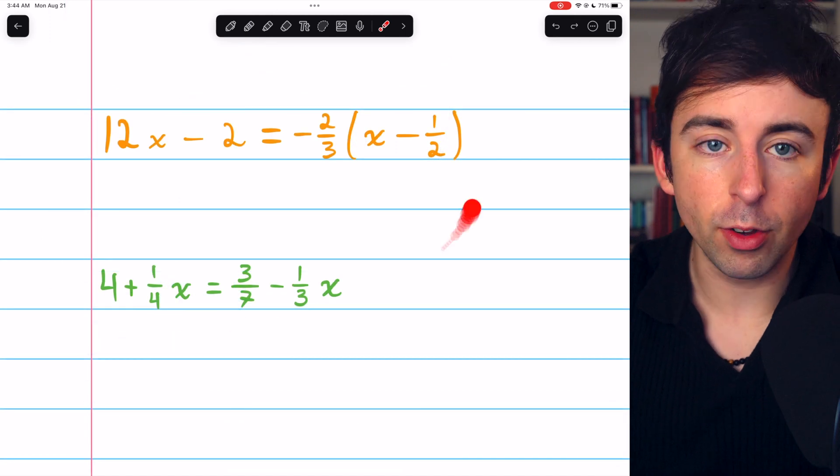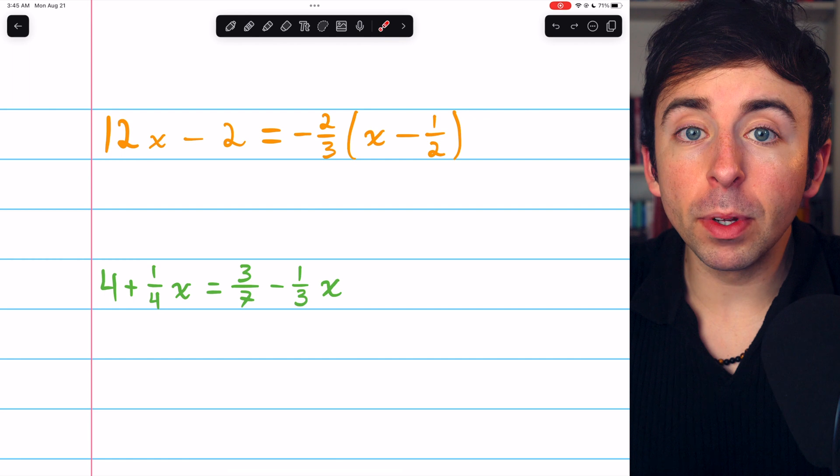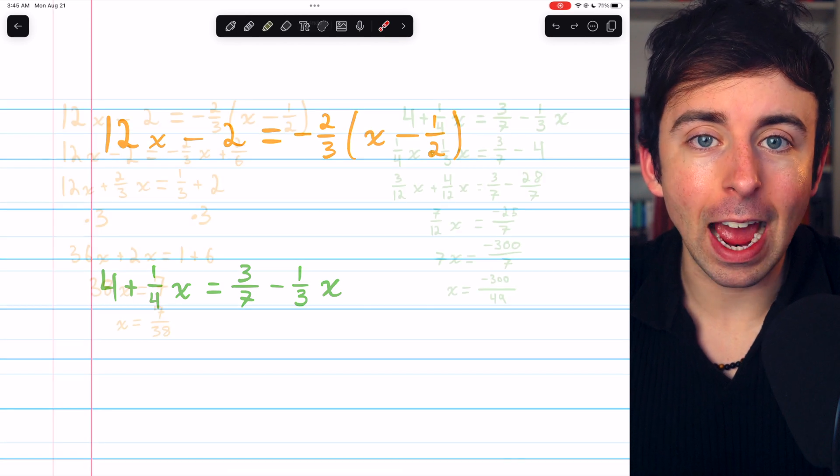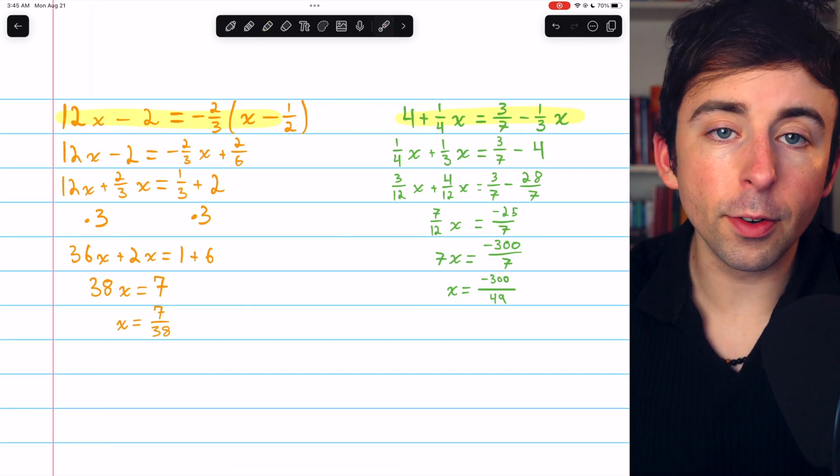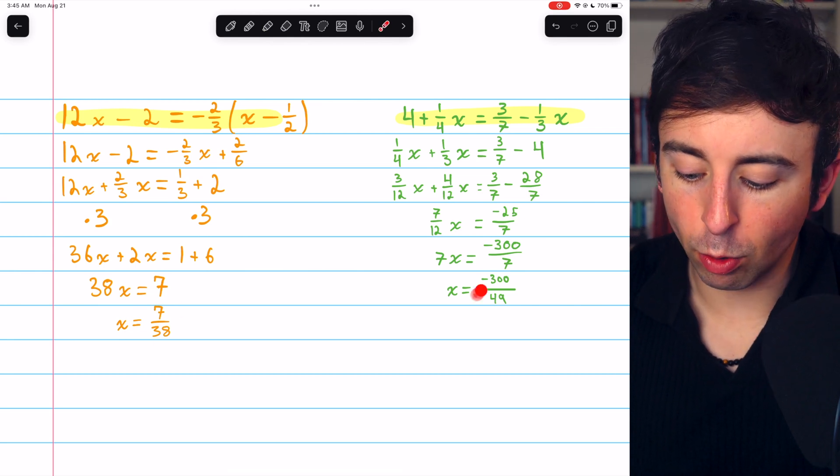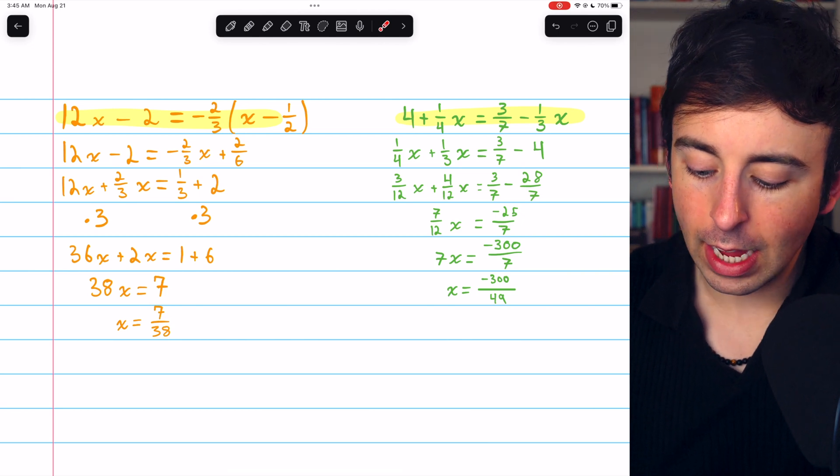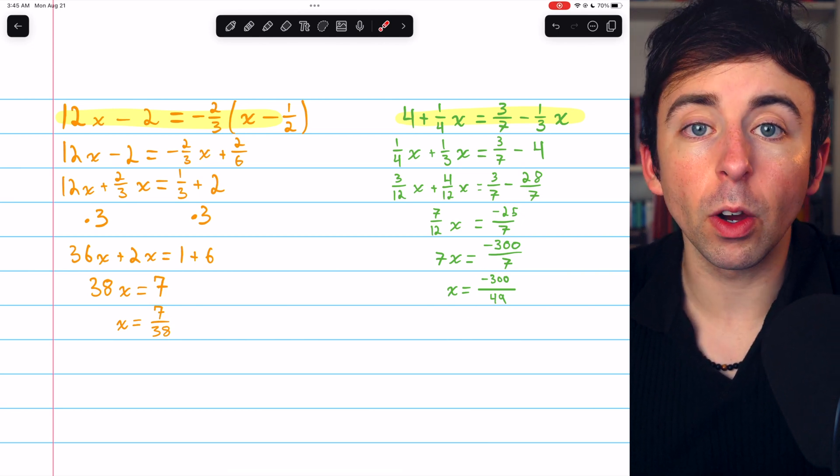Here are two more equations you can try to solve on your own. They are a bit harder. I'll put the solutions on screen now. And there the equations are with the solutions underneath them. You could have solved them slightly differently, but your answers should be the same: x equals 7/38 and x equals negative 300/49.